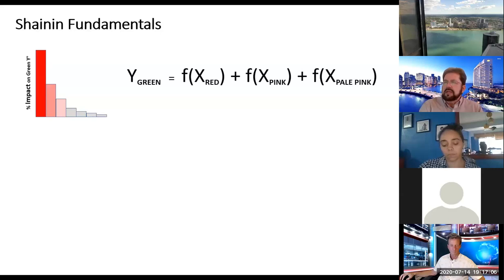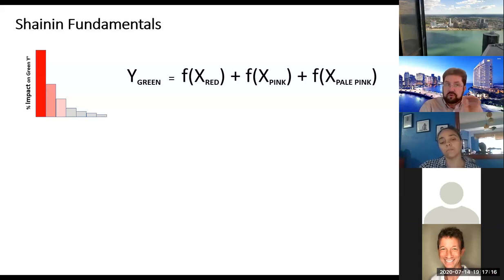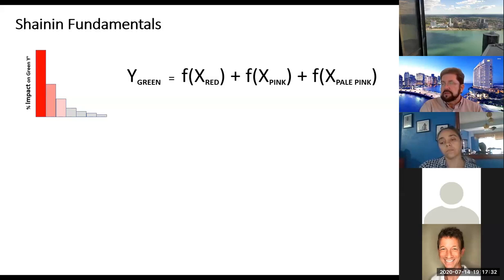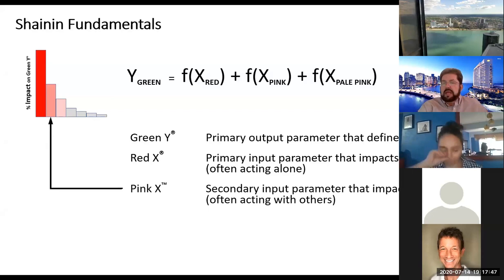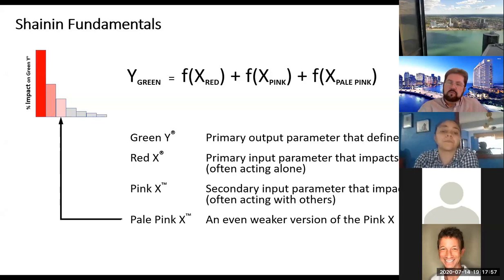The basic Shannon fundamentals: the Green Y is what you're trying to solve for. In Six Sigma terms, it's F of X. The Green Y is a function of the Red X — which gets into Pareto. Dorian was close friends with Juran, and both were really pushing Pareto methods. The Green Y is the primary output parameter you're trying to solve for. The Red X is the primary input parameter that impacts the Green Y, and often acts alone as a primary effect. A Pink X is a secondary input parameter — often an interactive effect. And a Pale Pink X is an even weaker version of the Pink X.